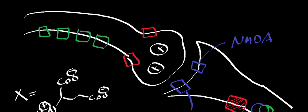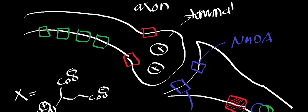So what I've drawn here, I've drawn an axon up here. This structure right here is called the terminal end bulb. The terminal end bulb stores a lot of neurotransmitter, and I've denoted that by having the circle, which is a vesicle with the X in it. X is the neurotransmitter.